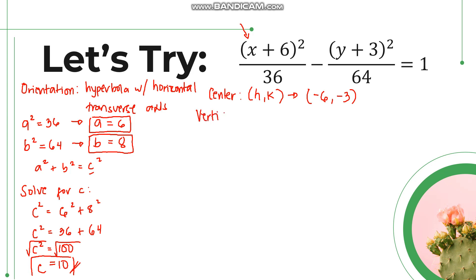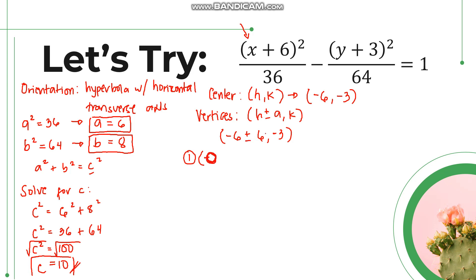Let's start with the vertices. Since it is a hyperbola with a horizontal transverse axis, the vertices are found using (h ± a, k). So we have h = negative 6, plus or minus a = 6, and k = negative 3. The first vertex is (negative 6 plus 6, negative 3) which is (0, negative 3). The second is (negative 6 minus 6, negative 3) which is (negative 12, negative 3).